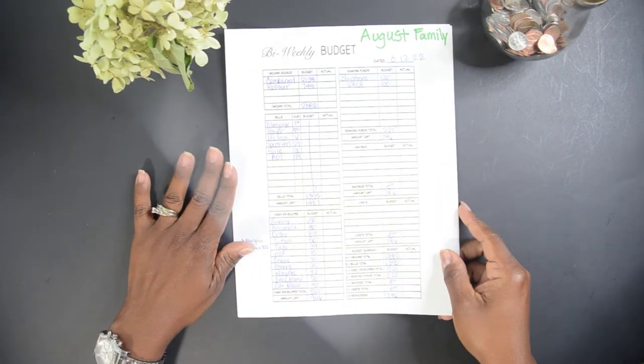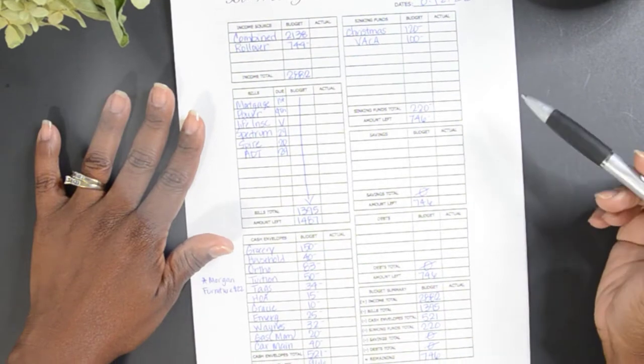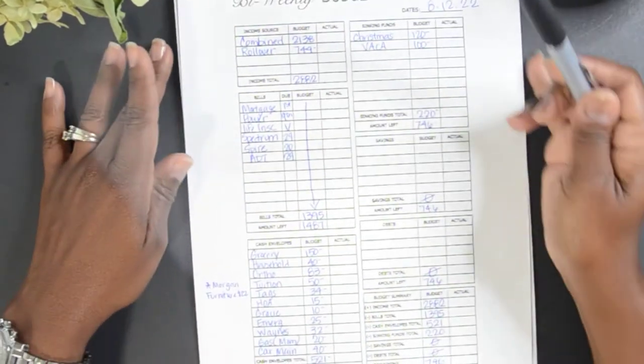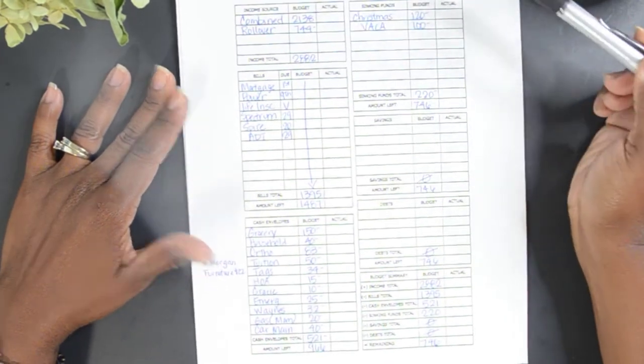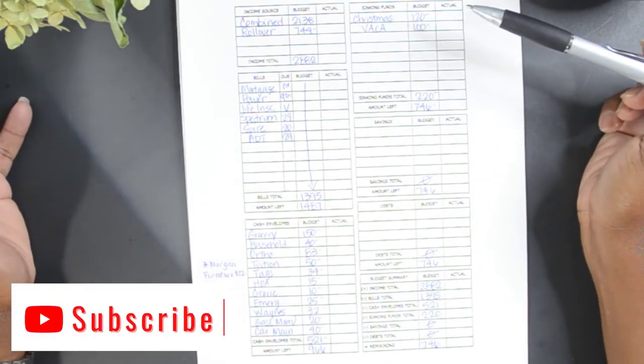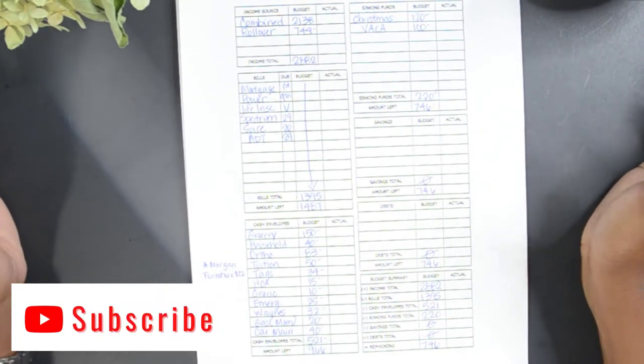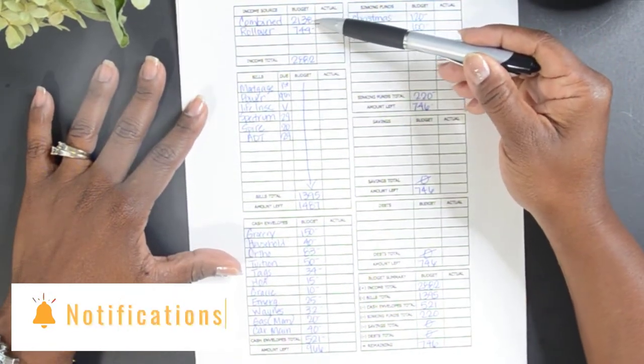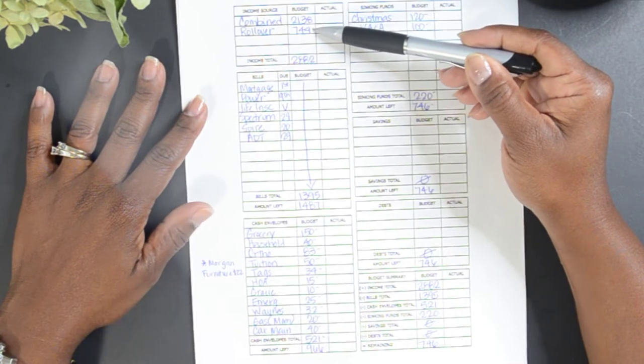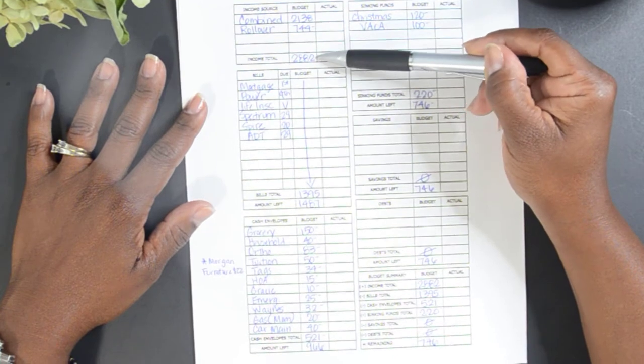So I'll start with my family's budget. For those of you that don't know, my husband and I do budget separately. However, we do have a portion of our income that goes into what we consider our family's budget, and that combined income is $2,138. We had a rollover last month of $744, so that made our total income $2,882.